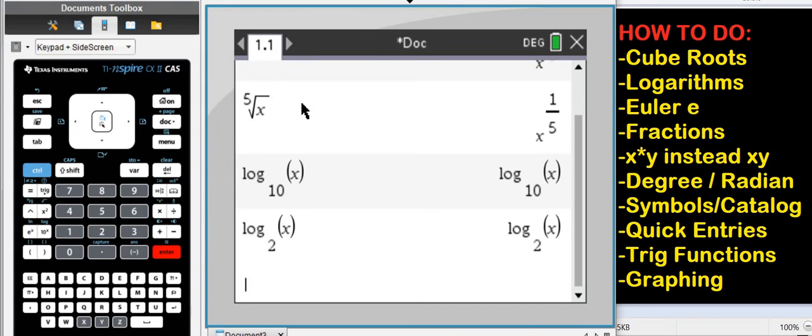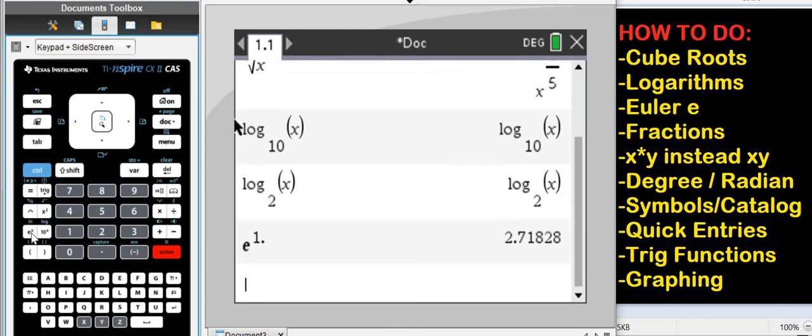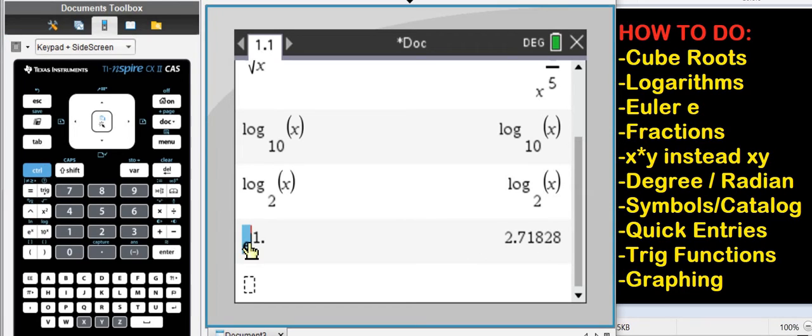Now Euler number. Euler number is e to the X button. If you do e to the 1 comma 0, you're going to see the Euler number 2.71. It's a constant. Notice the E is bold.